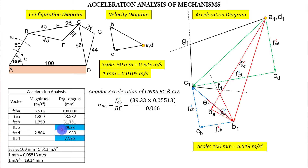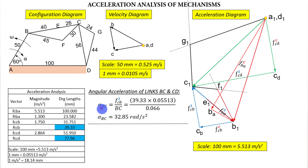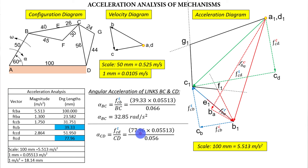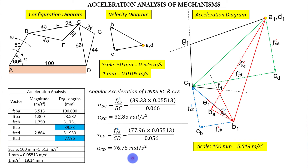Measuring FTCB from the diagram gives 39.33 mm. Converting: multiply by 0.05513 (the scale factor) to get 32.85 m/s². Then alpha_BC = 32.85 / 0.066. For link CD, the tangential component (green dotted arrow) is 77.96 mm. Multiply by 0.05513, then divide by CD = 0.056 m to get alpha_CD.